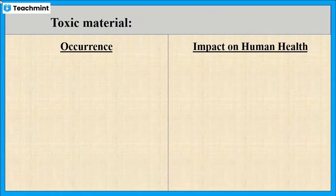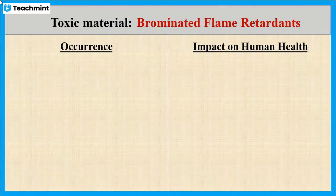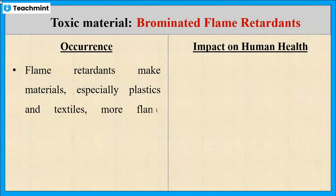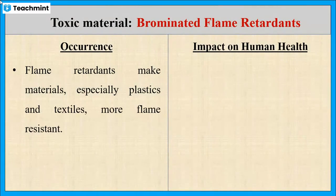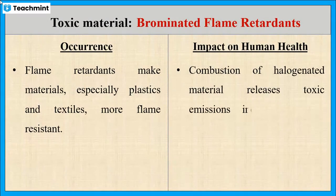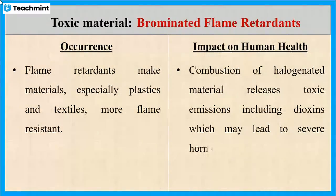The next one is brominated flame retardants. These are used in electronic components to make them flame resistant. Combustion of these materials releases toxic substances like dioxin, which may cause hormonal disorders.